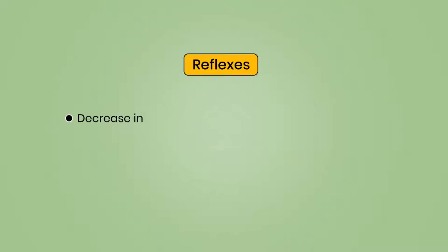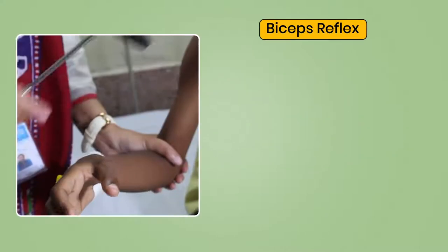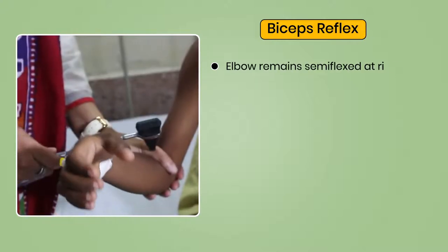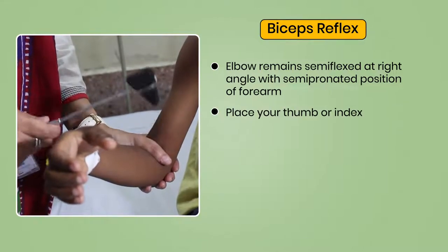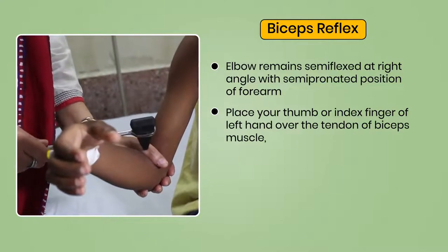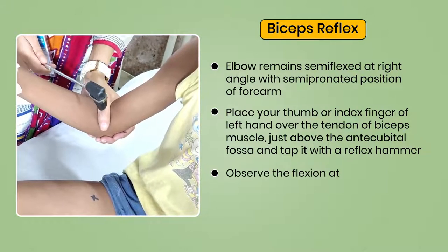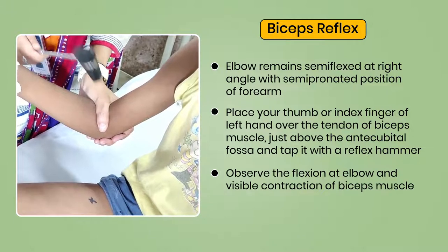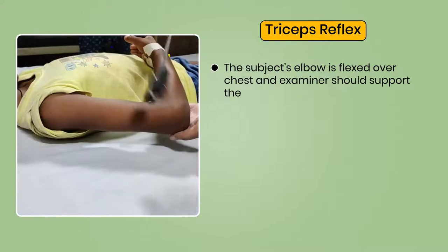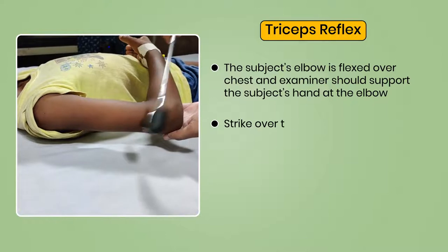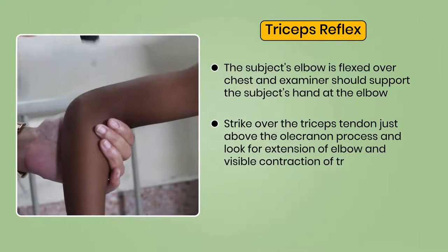A decrease in reflexes signals lower motor neuron lesion, whereas an increase in reflexes signals upper motor neuron lesion. For the biceps reflex, the elbow remains semi-flexed at a right angle with a semi-pronated forearm. Place your thumb or index finger over the tendon of the biceps muscle just above the antecubital fossa and tap it with a reflex hammer. Observe the flexion at elbow and visible contraction of the biceps muscle. For the triceps reflex, the subject's elbow is flexed over the chest. Strike over the triceps tendon just above the olecranon process and look for extension of the elbow and visible contraction of the triceps muscle.